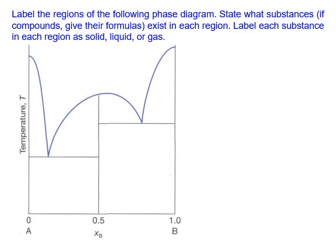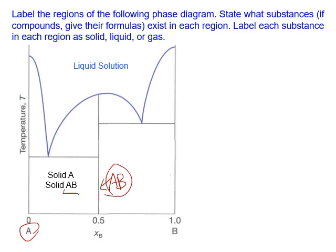This question asks you to label the regions of a liquid-solid phase diagram. At high temperature everything is a single liquid phase. At very low temperature they become two solids. On the left side is solid A. On the right side is the product formed from A and B combined, which we can call solid AB. In another region the right side is reactant B and the product AB again.